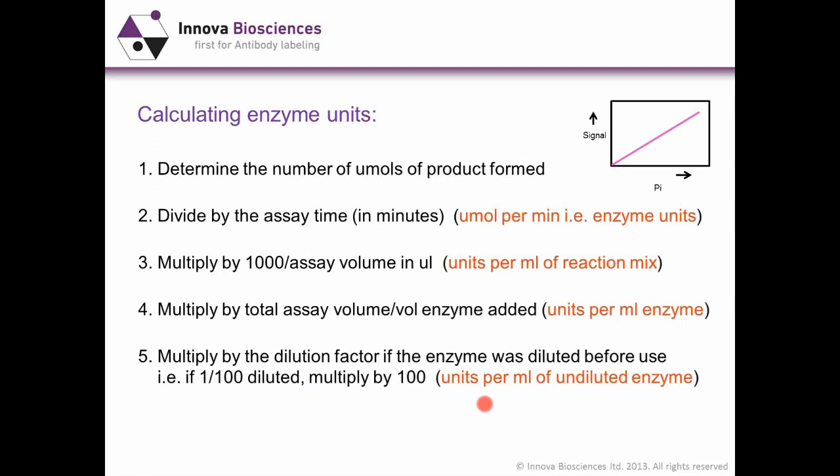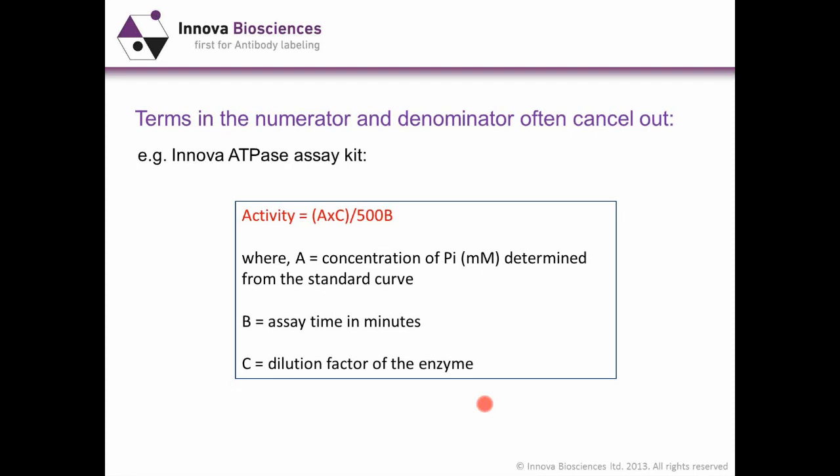We could also express that as a formula. What tends to happen is terms in the numerator and denominator often cancel out. For an ATPase assay kit, the calculation distills down to just A times C divided by 500B, where A is the concentration read off your standard curve, B is the assay time in minutes, and C is the dilution factor of your enzyme. In a matter of 4 or 5 seconds you can type those numbers into a calculator and get your answer. I'm not going to say any more about enzyme units in the rest of this presentation, but we do get a lot of questions on that, so I hope that was helpful.